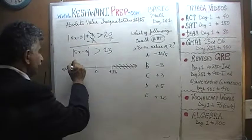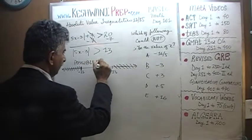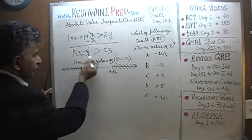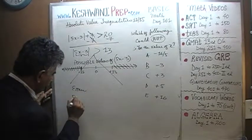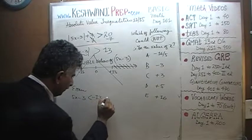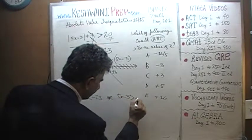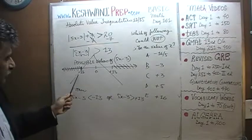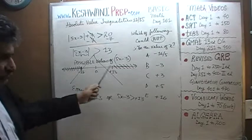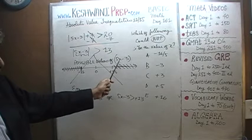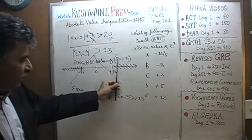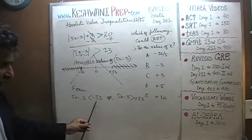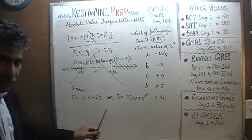These are the possible values of 5x minus 3. This number line does not show the possible value of x — it shows the possible value of the quantity inside the absolute value sign, 5x minus 3. So 5x minus 3 has to be more than positive 13, or 5x minus 3 has to be less than negative 13. All we have to do now is solve for x.